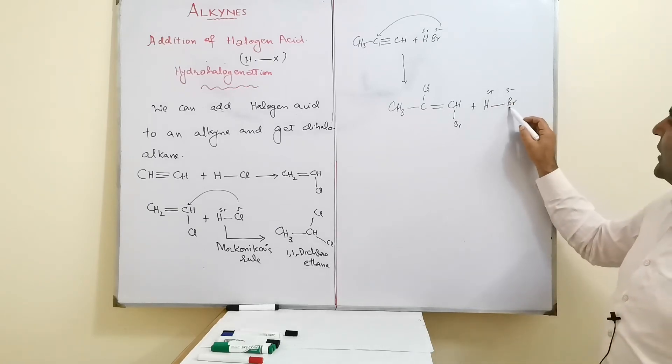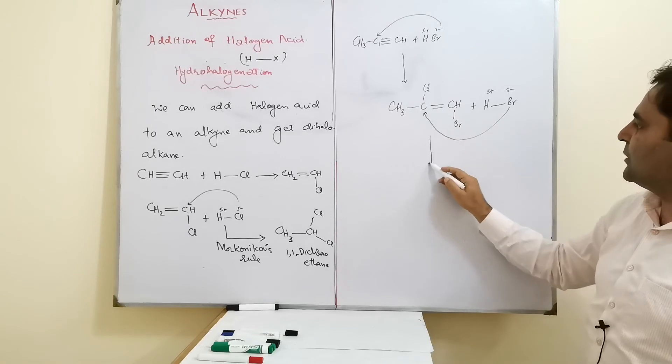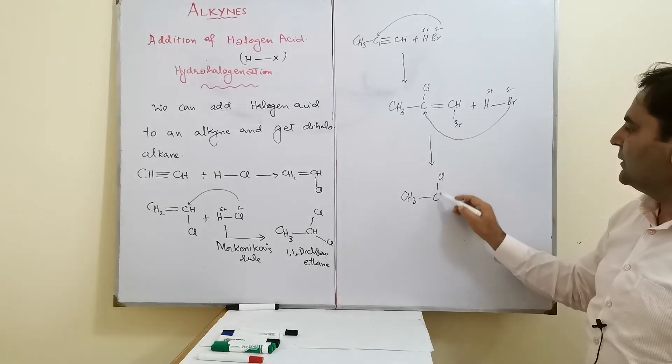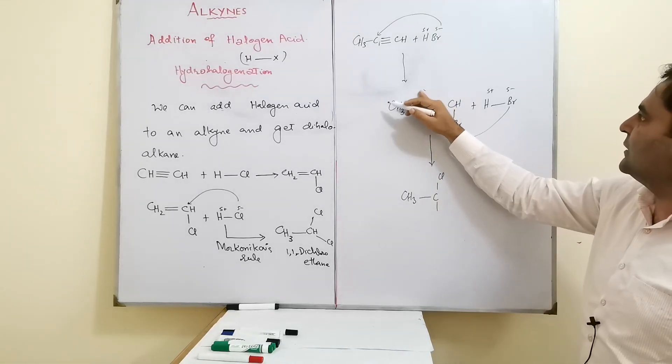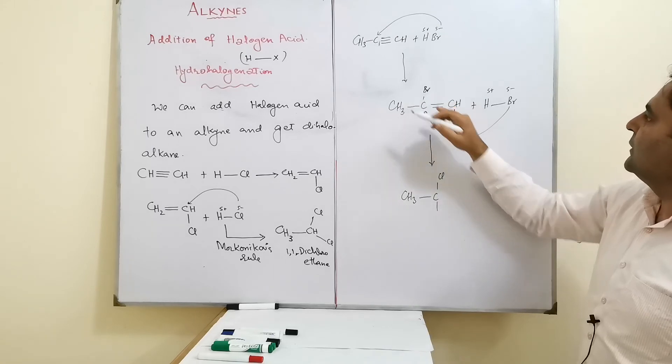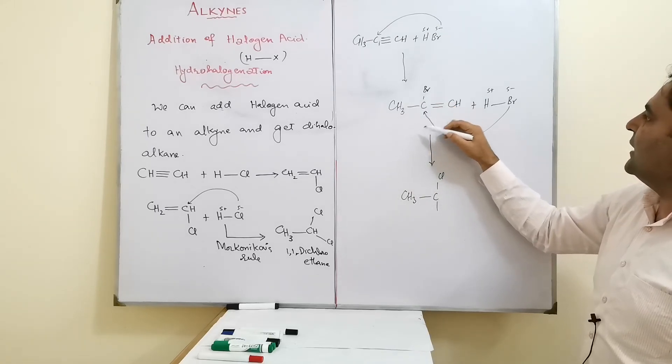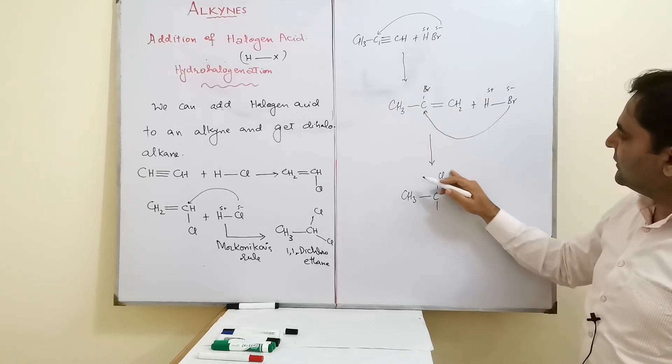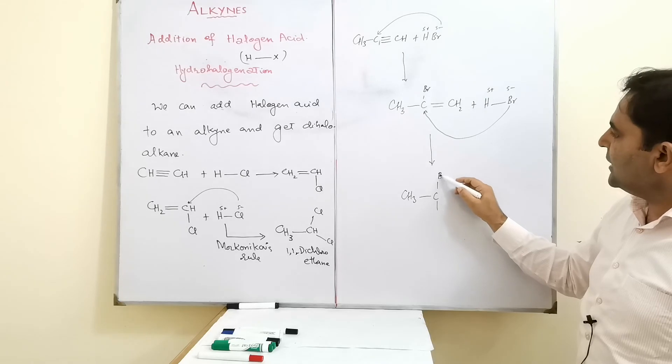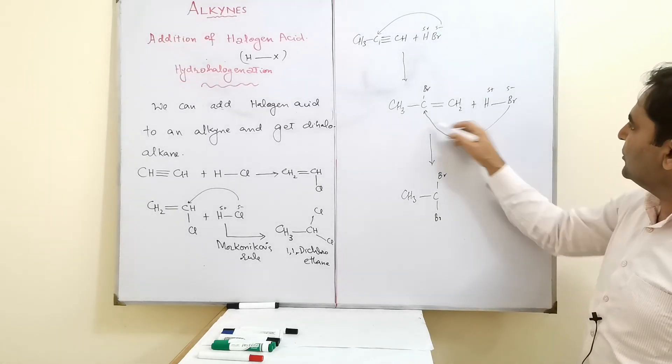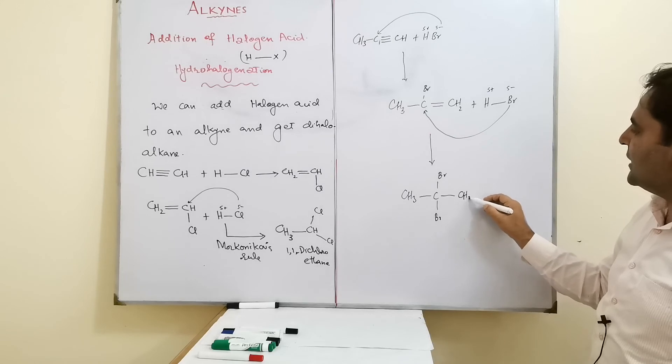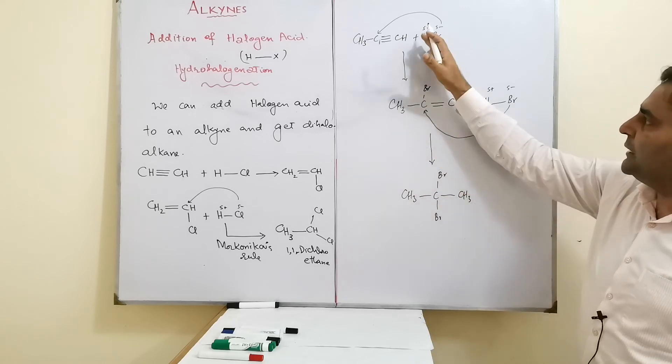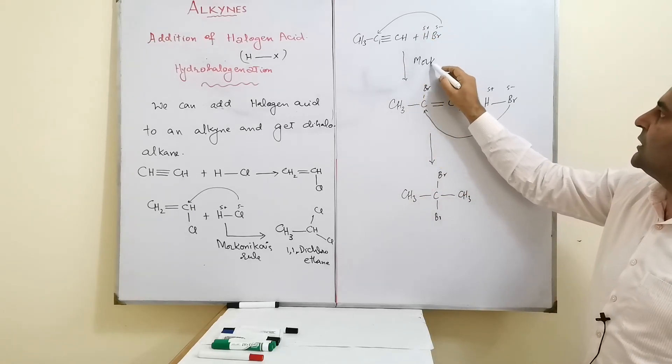Now the next addition of HBr will happen similarly - negative part goes to that carbon which has least number of hydrogen atoms. The product is CH₃ with two bromines on the same carbon. Hydrogen here, bromine already present, and the second bromine also goes here. Both first and second additions follow Markovnikov's rule.